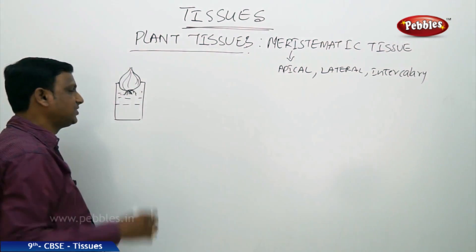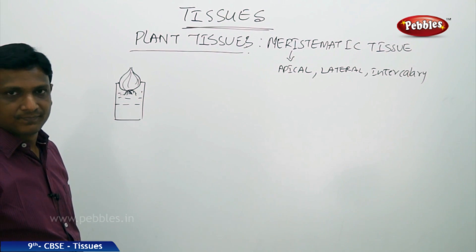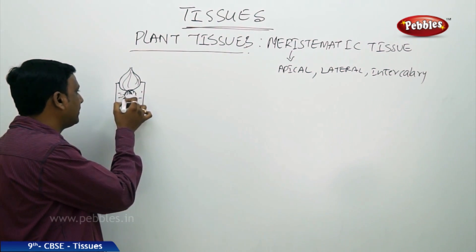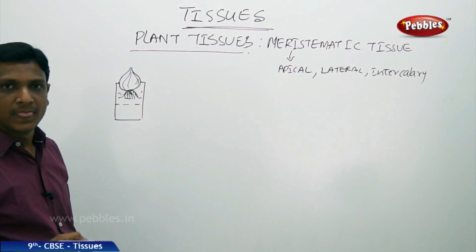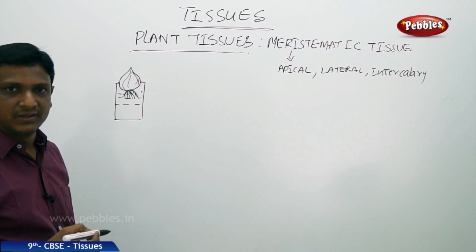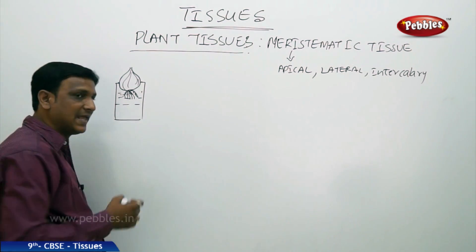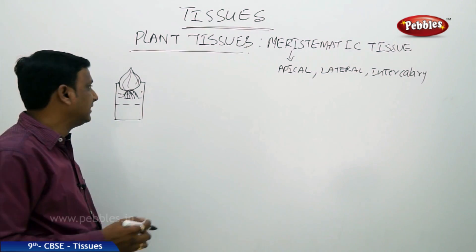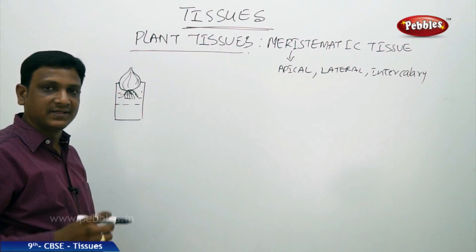If you observe the onion bulb for a few days, the roots will be actively growing downward. You can measure the growth day by day and make a table for the first day, second day, third day, to see the improvement in root length.